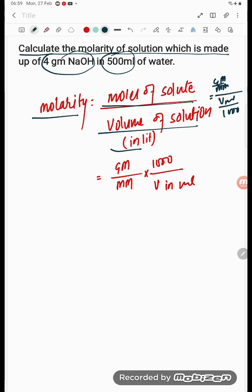So what is there student? If you are solving, this will go reciprocal. So gm into 1000 upon mm divided by V in ml.